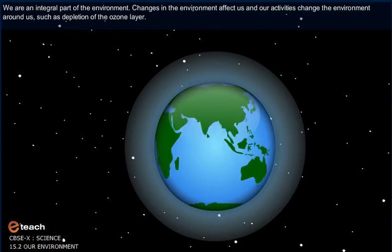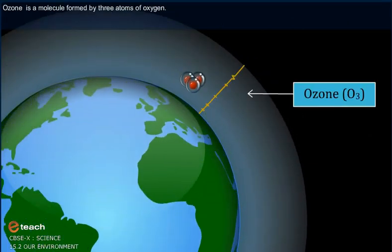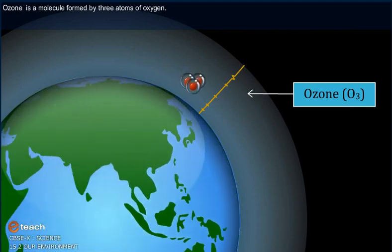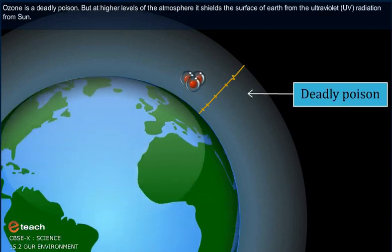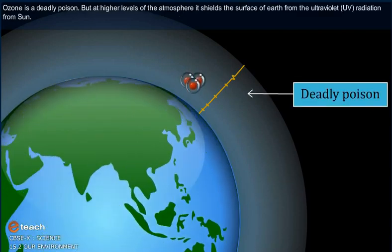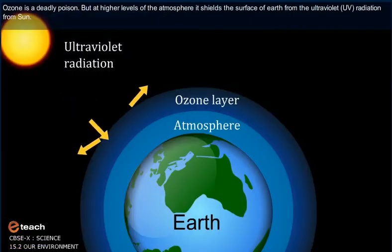That is, depletion of the ozone layer. Ozone, that is O3, is a molecule formed by three atoms of oxygen, while O2, which we normally refer to as oxygen. Ozone is a deadly poison, however, at the higher levels of the atmosphere.